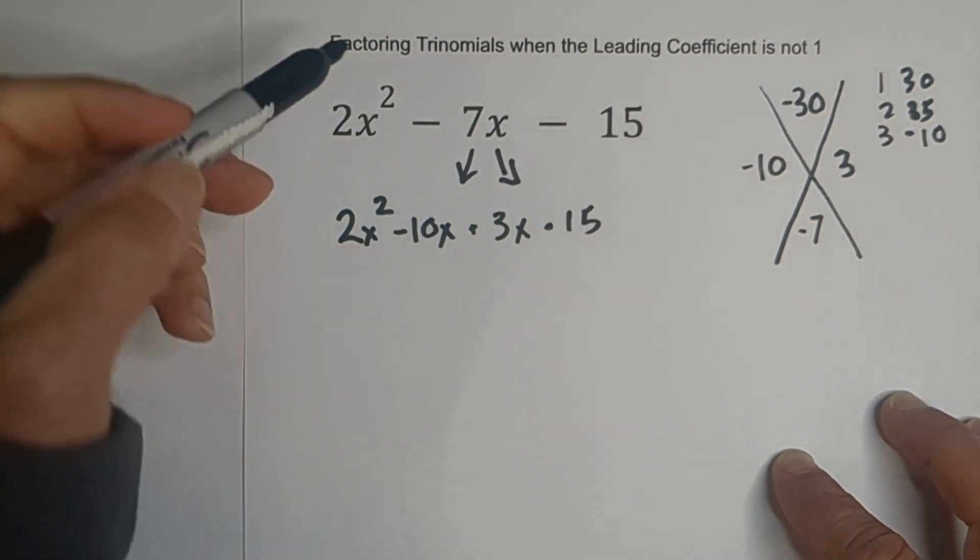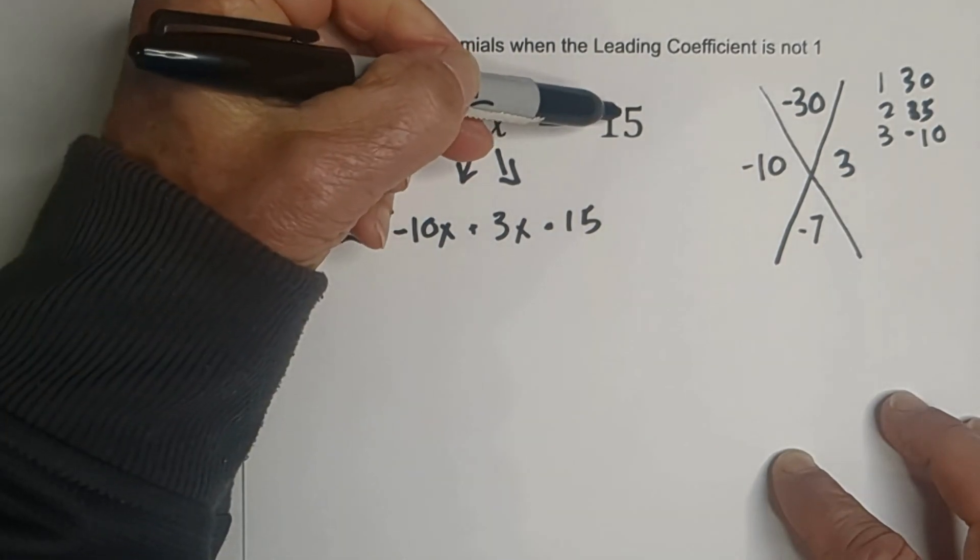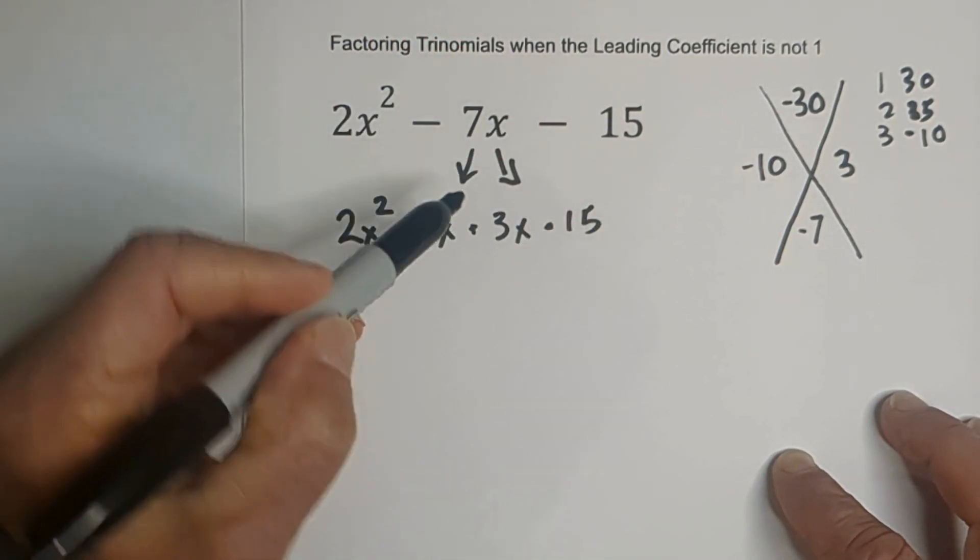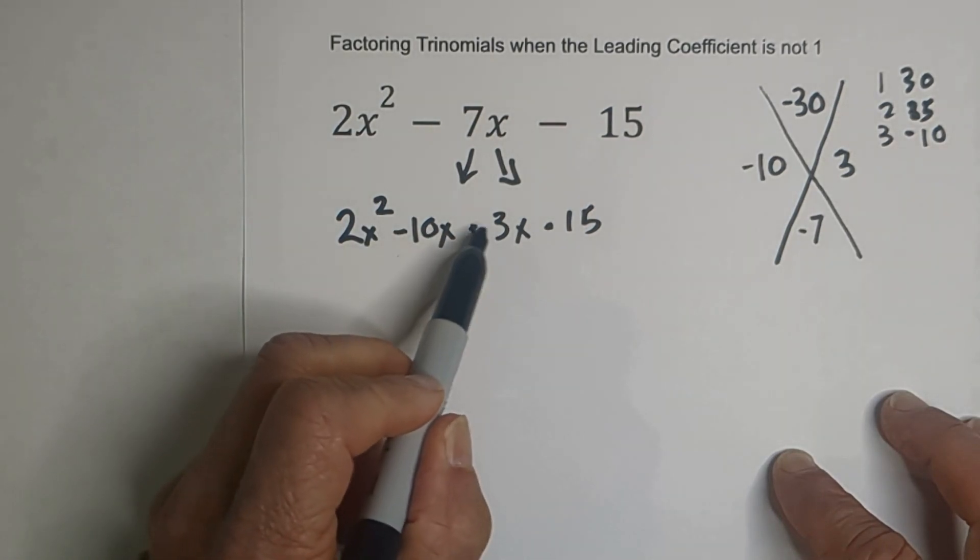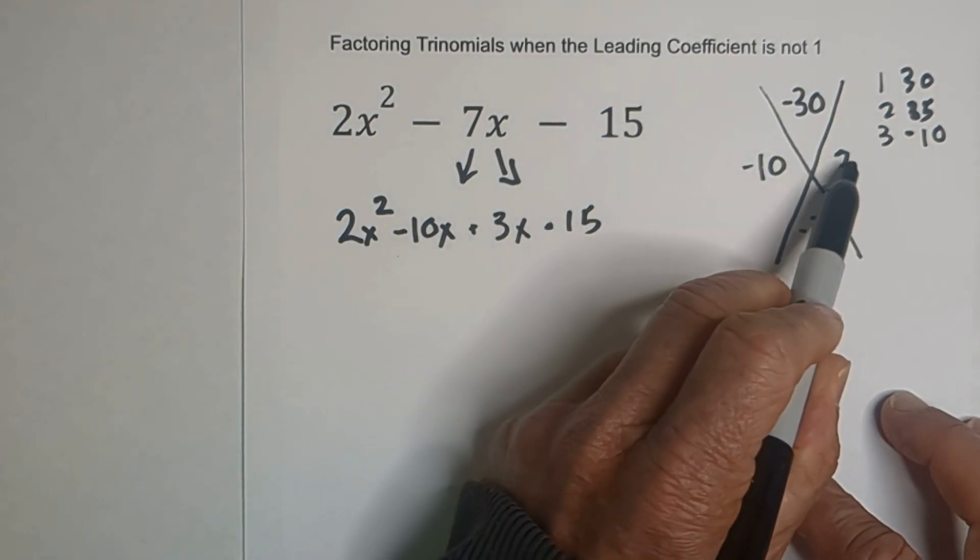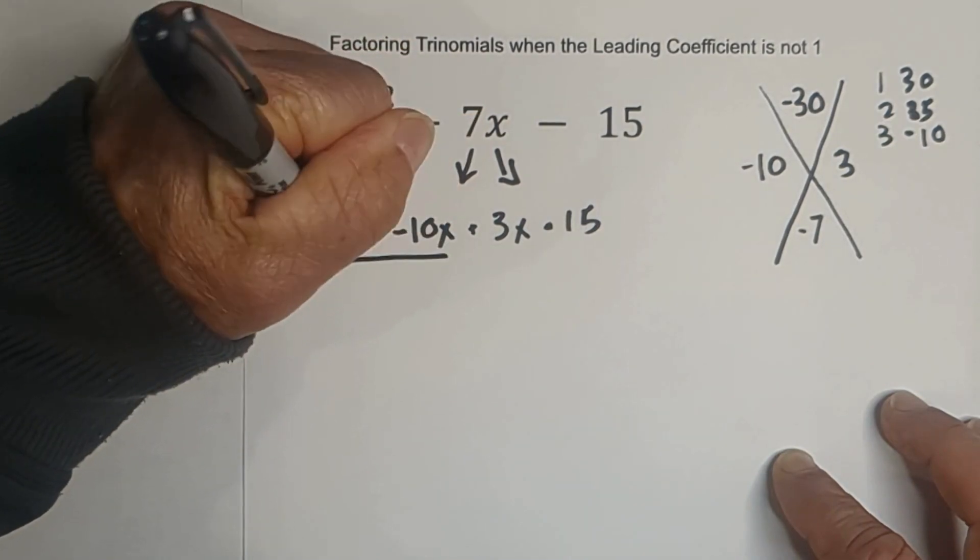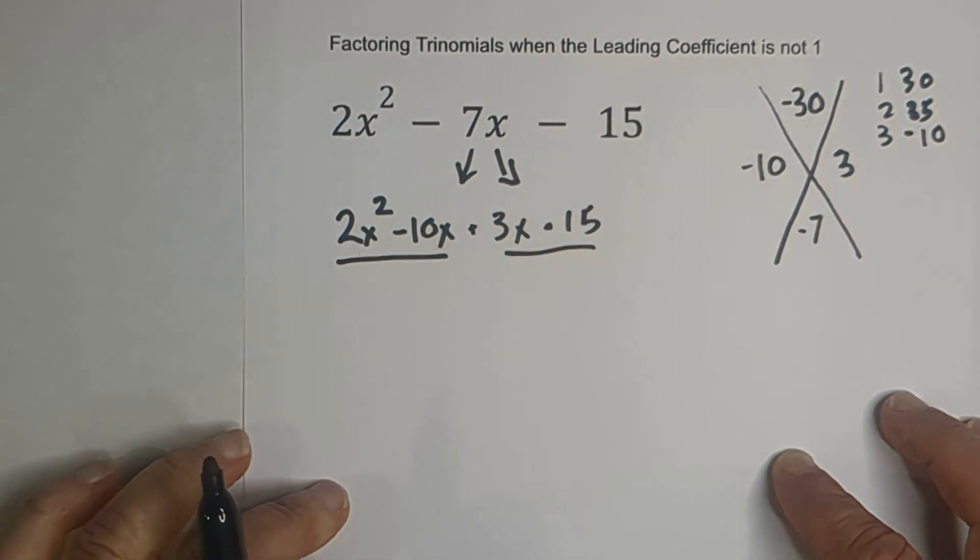So basically what you've done is we've brought this down, we brought this number down, and we've just split the middle term into negative 10x and a positive 3x. Now we have these two terms.